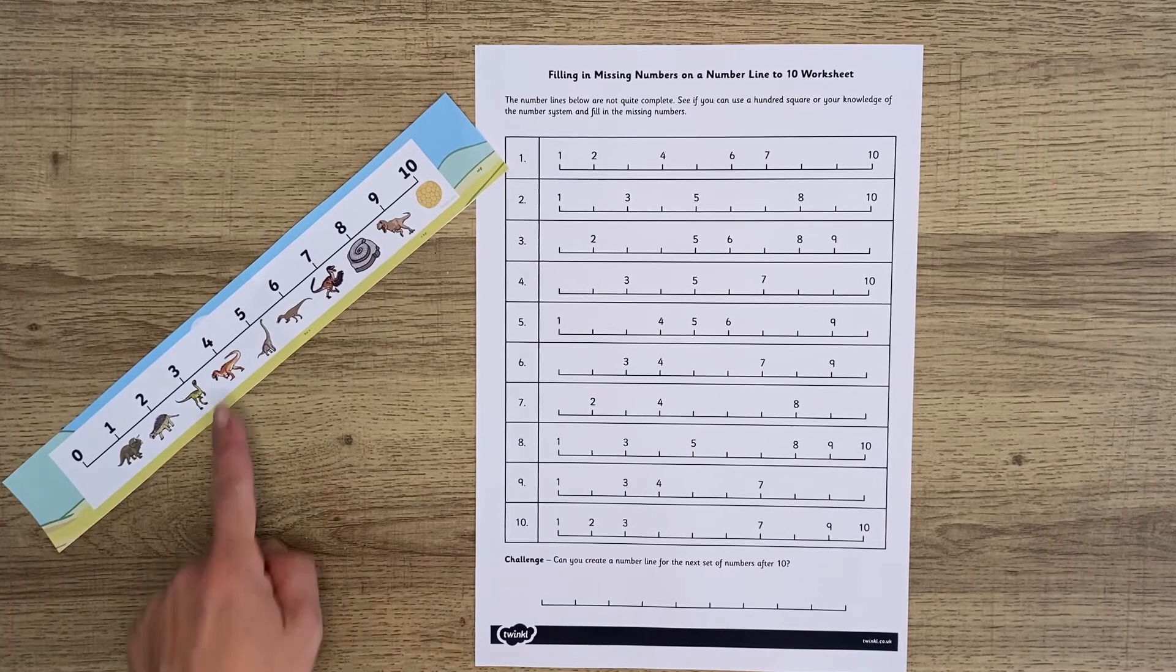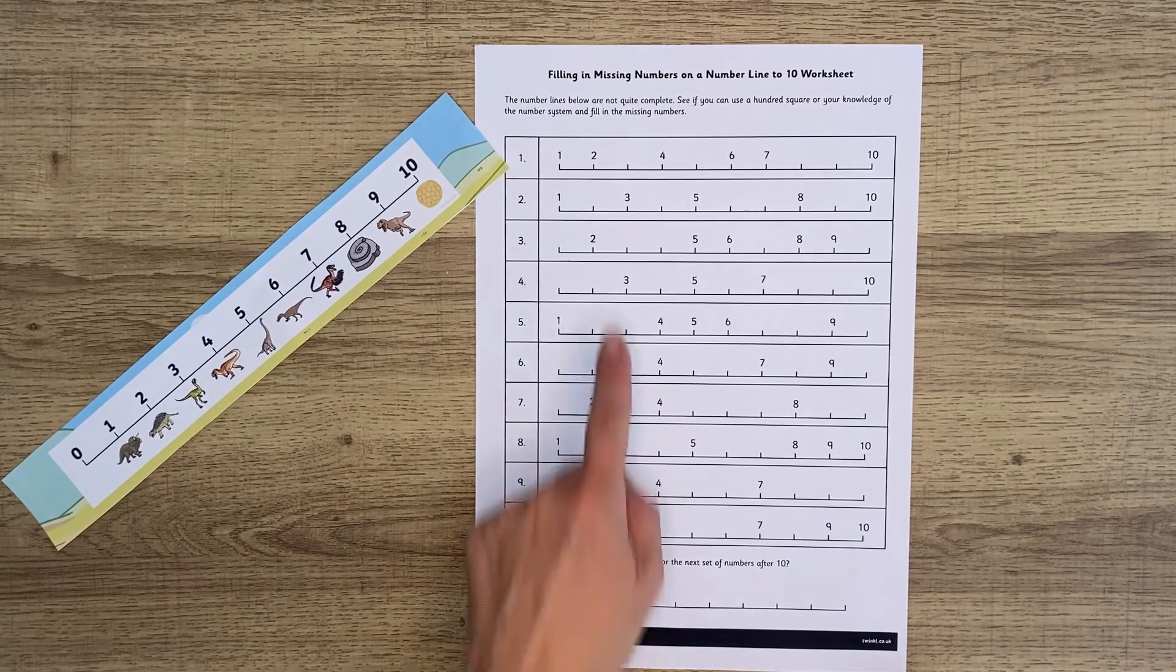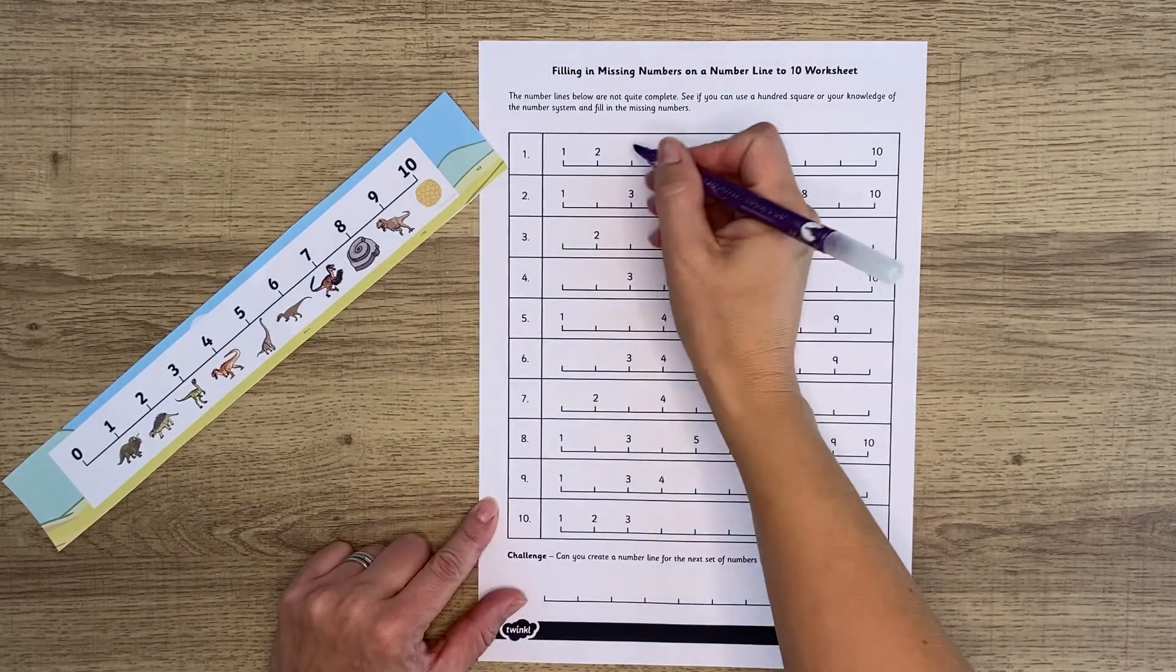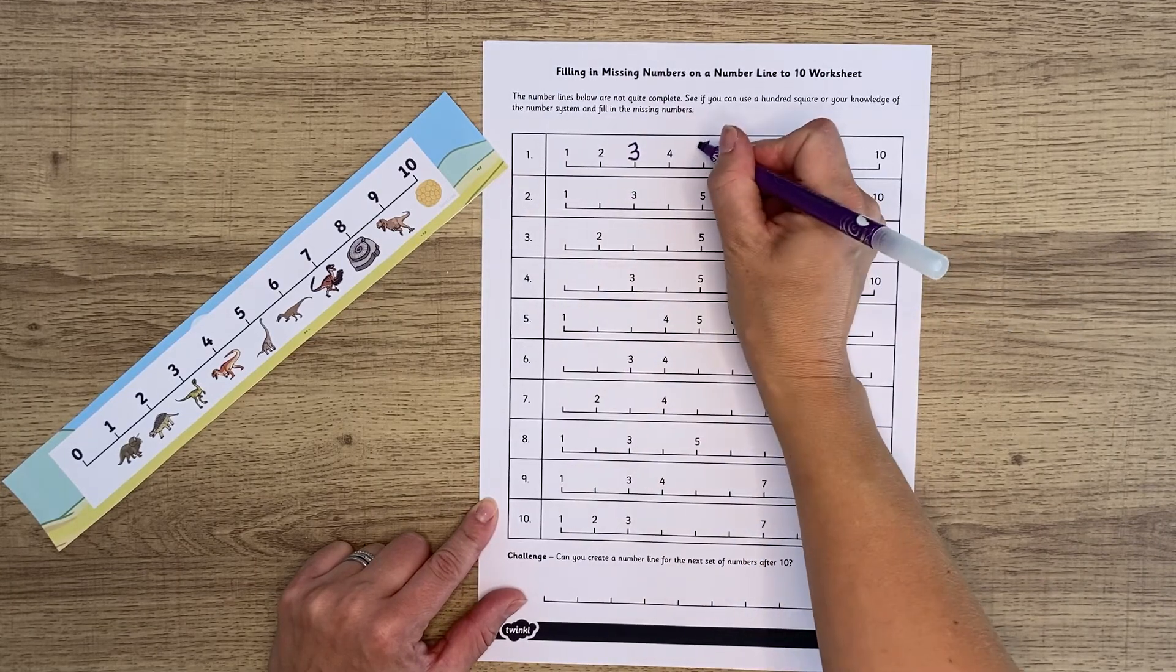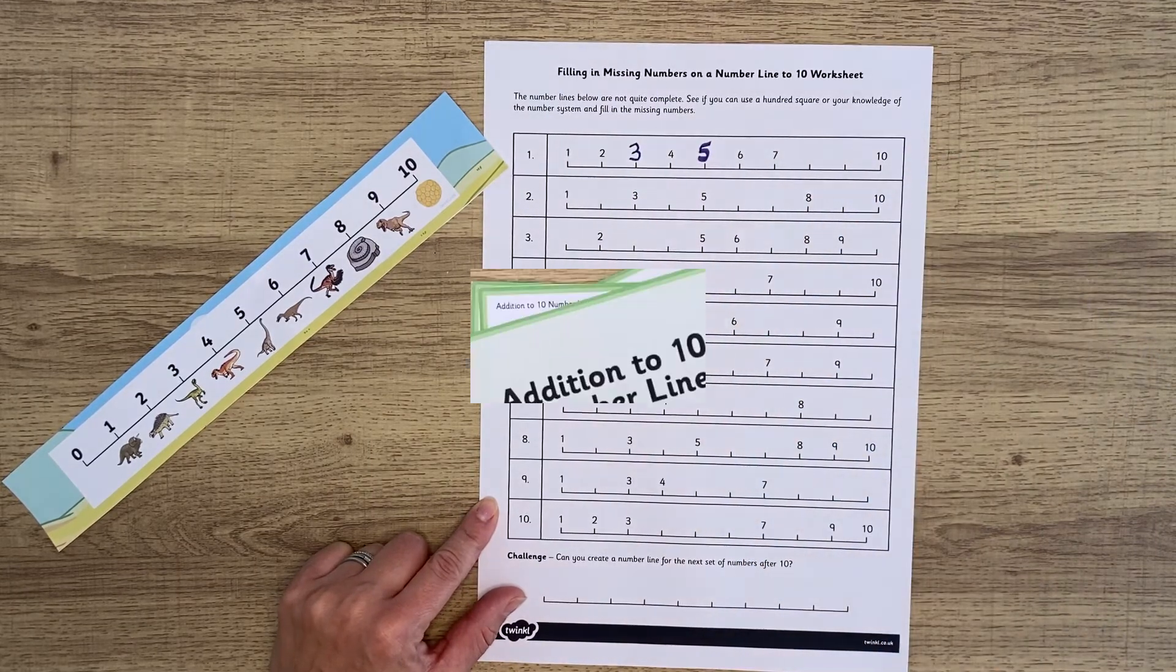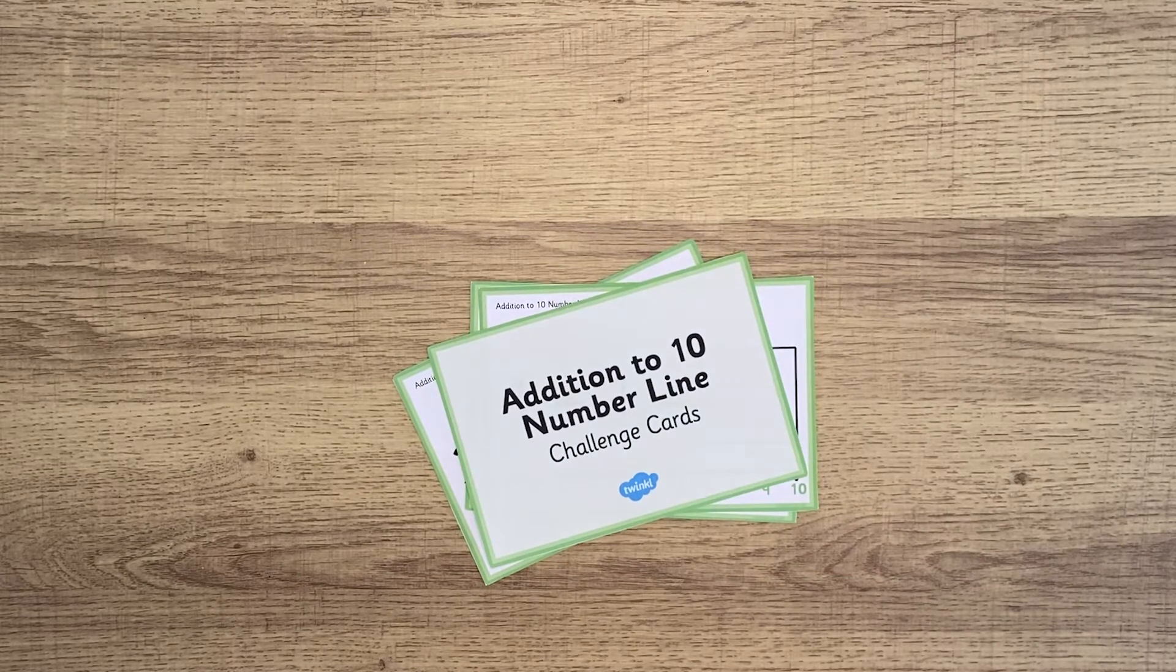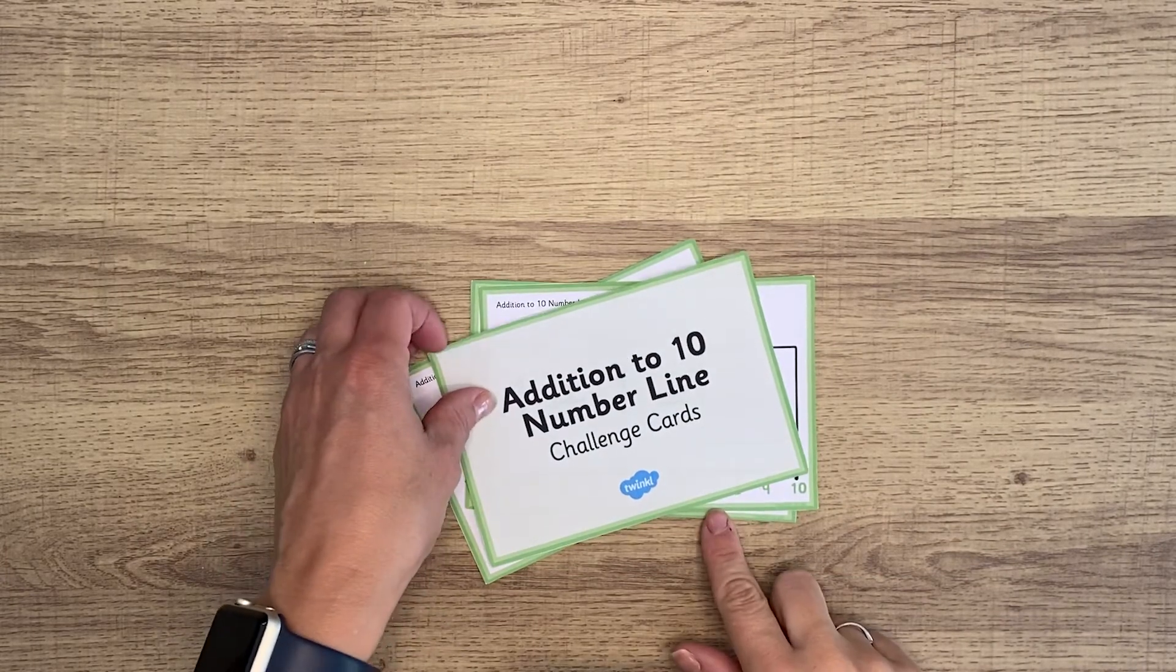Once more confident, either using the number line or without, you can fill in the blanks, and then move on to using the number line to help with simple addition sums.